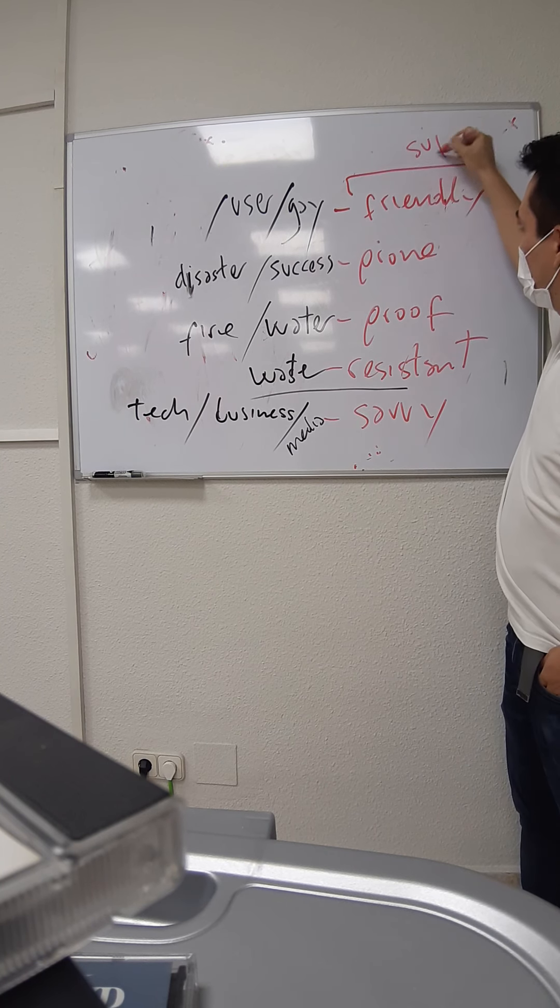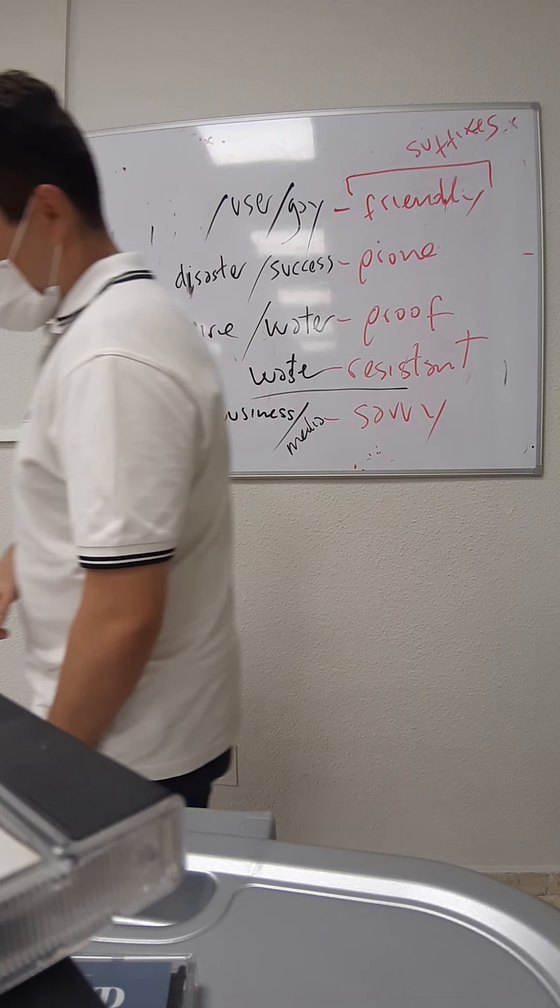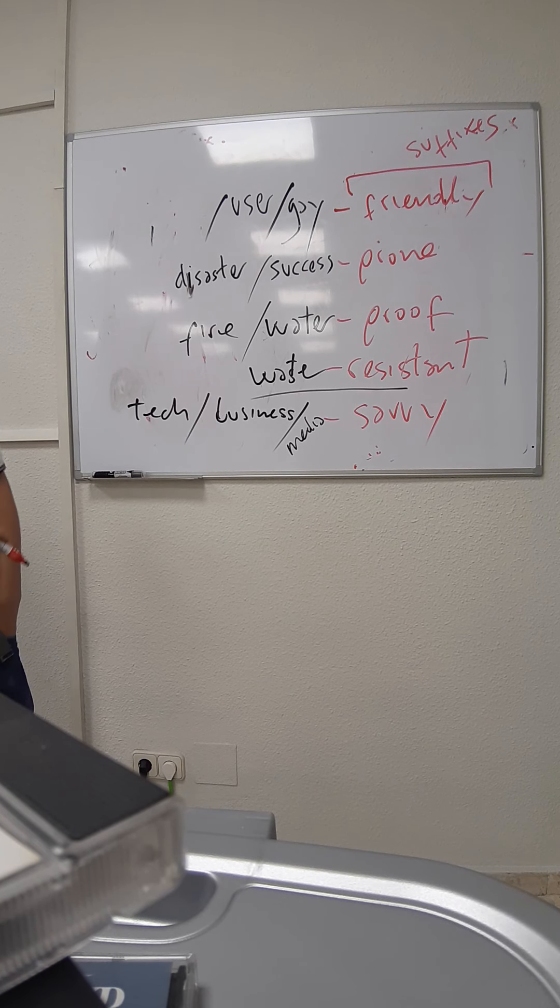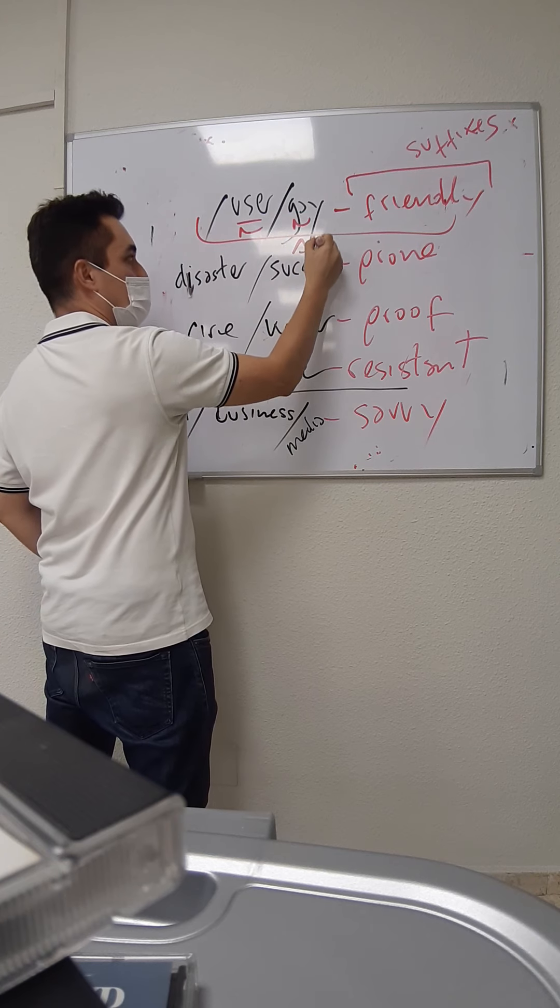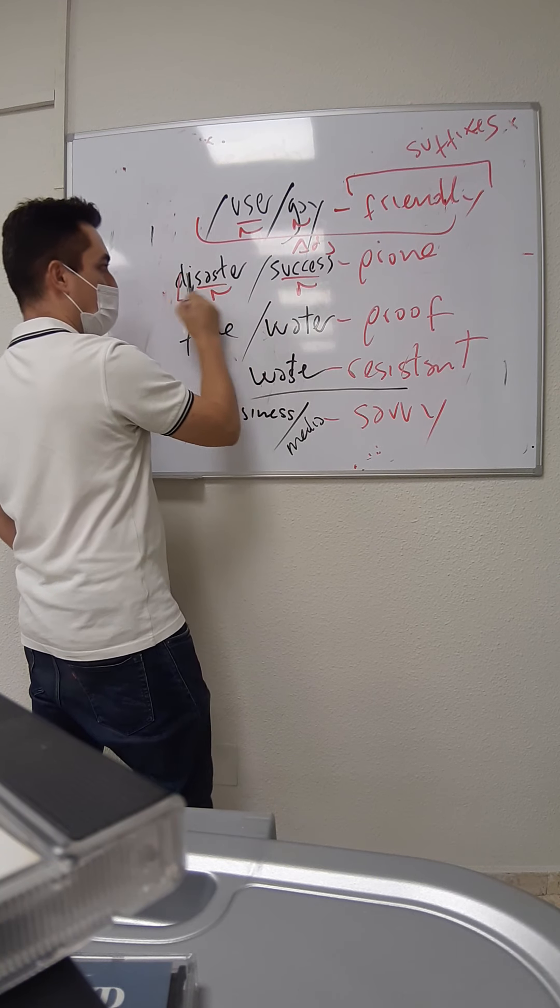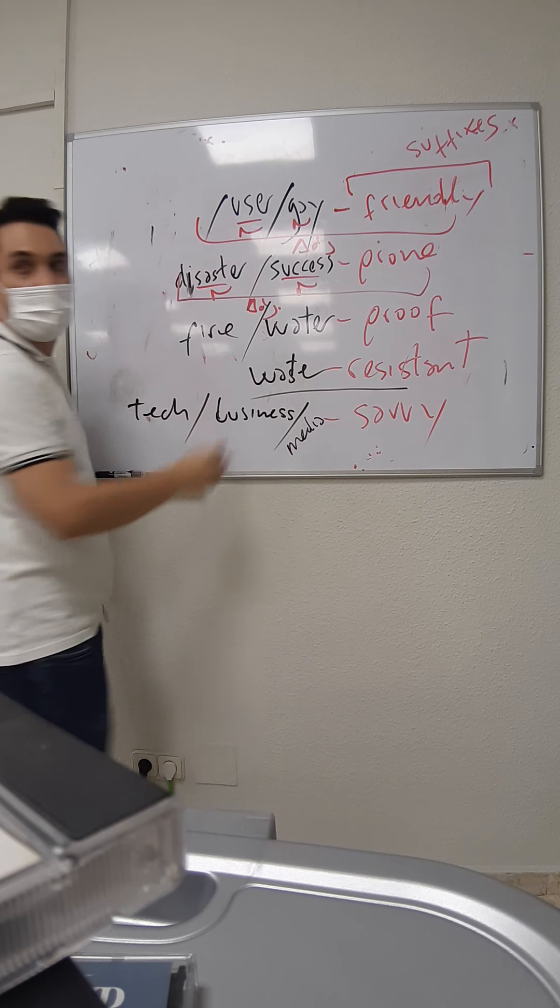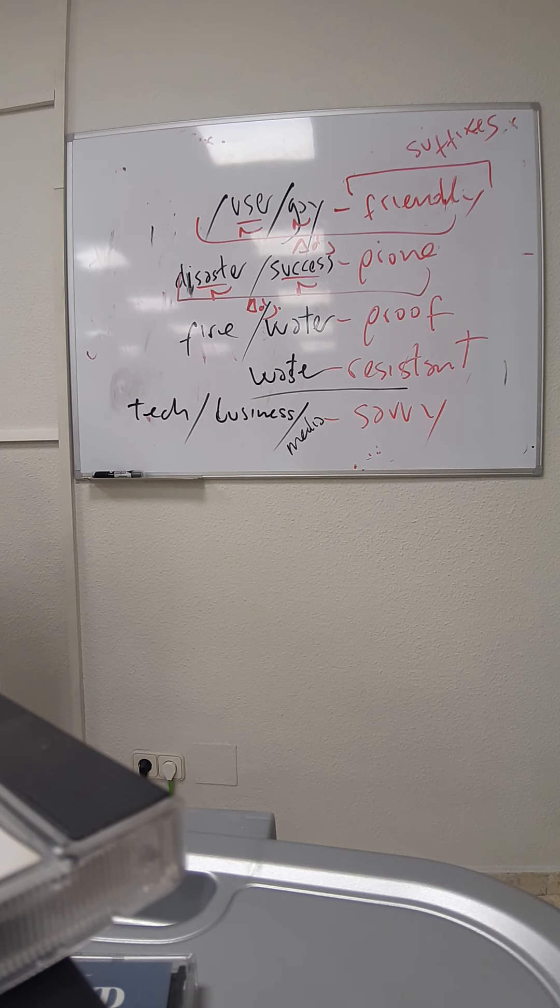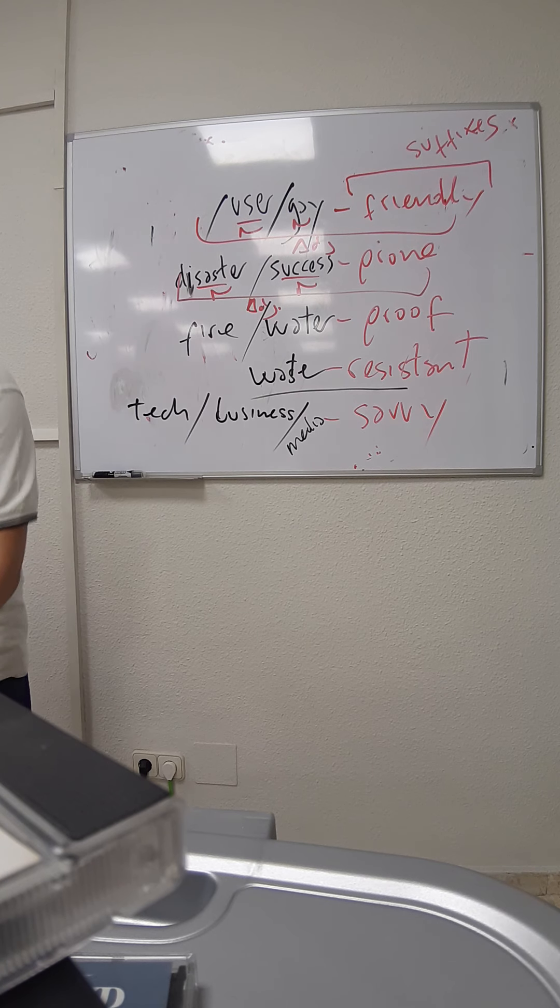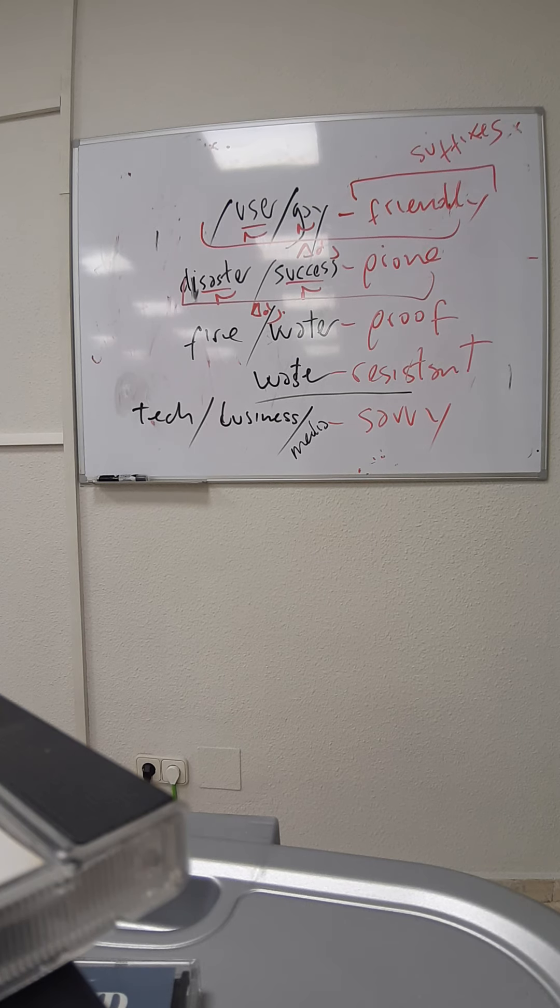So what are these? These are suffixes. And what do they do? Is the word category the same or different? The word category is different. Noun, adjective. So noun, noun, and the whole thing is adjective. The same with all of them. So the word category changes from noun to adjective, and the meaning changes. Any questions? This is the end of the explanation. Let's do.